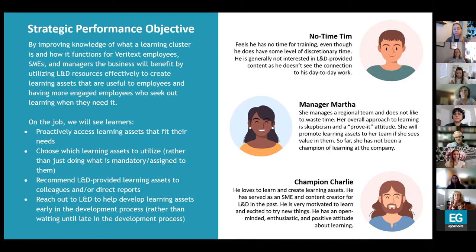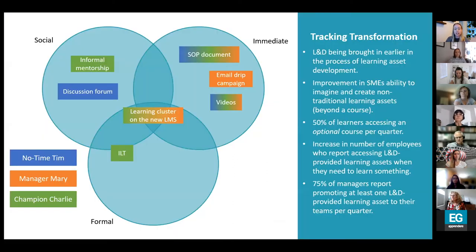Then we have Champion Charlie, one of our SMEs. He loves to learn and create learning assets, has served as an SME and content creator for L&B in the past, and is very motivated to learn and excited to try new things. He has an open-minded, enthusiastic, and positive attitude about learning. Charlie is the one we'd like to have promoting what we're doing and also helping encourage other SMEs to reach out to L&B early in the development process — which is what he's already doing.